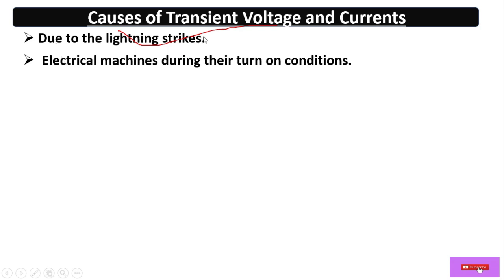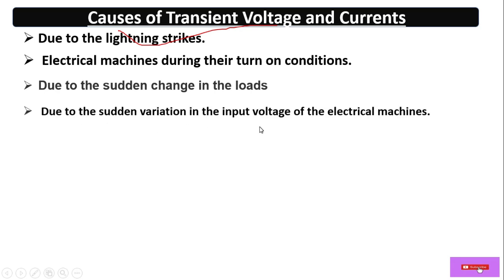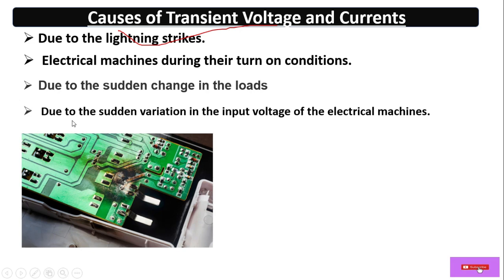The causes of transient voltage and surge current include: lightning strikes, switching of electrical machines during turn-on, or sudden changes in loads. For example, if we suddenly increase load from 20 kilowatts to 200 kilowatts within a millisecond on a particular feeder, transient voltage or surge current may arise. Sudden variation in the input voltage of electrical machines can also cause transient voltage and surge current.